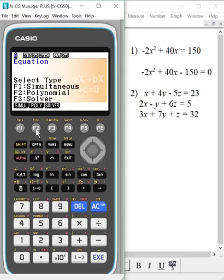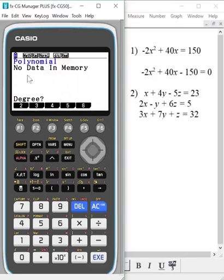I'm going to go into polynomials, so I'm going to choose F2. First thing that's asked for is what degree is it? So that's something that's important for students to understand. How do I find the degree of my polynomial? We have a second degree polynomial, and so I'm going to hit F1 to match up with second degree. Notice you can go up to 6 degree polynomial.